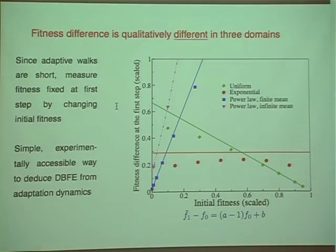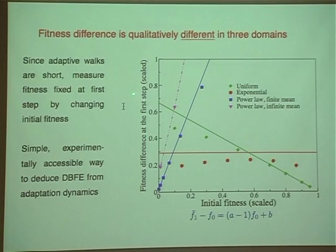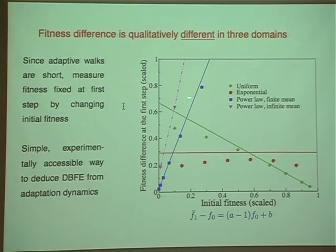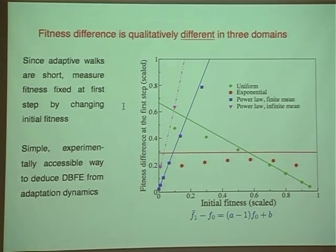For bounded distributions, plotting fitness as a function of adaptive substitution step shows decreasing step heights — the usual diminishing returns pattern. For unbounded distributions, step heights increase — accelerating returns. This is also seen when plotting fitness difference at the first step versus initial fitness: it decreases for bounded distributions, increases for unbounded ones, and is roughly constant for exponential. The main message is: if you do an adaptation experiment and plot the fitness difference at each step, whether it increases or decreases tells you what class of DBFE underlies that system.